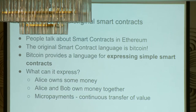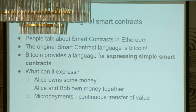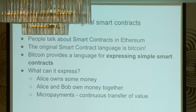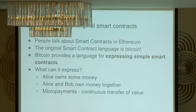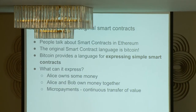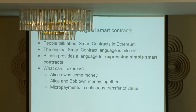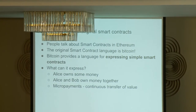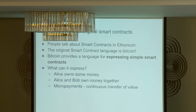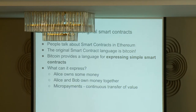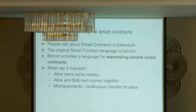A lot of people talk about smart contracts and mean Ethereum and other complicated blockchains with Turing-complete languages. But actually Bitcoin allows you to write some smart contracts — it's maybe not well known, but it is the original smart contracts language. It allows you to write some expressions, and here are a few examples of what Bitcoin can express as a smart contracts language.